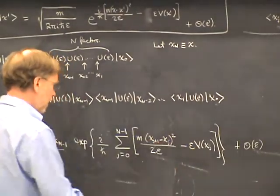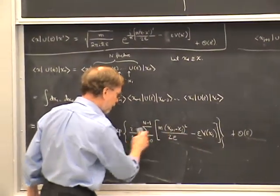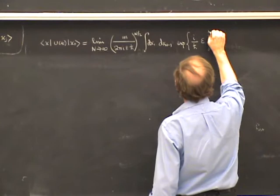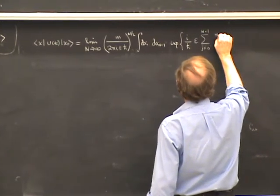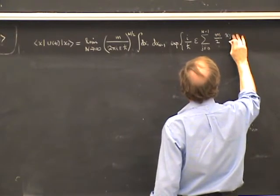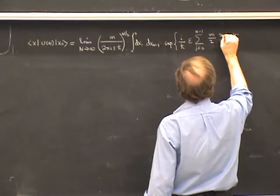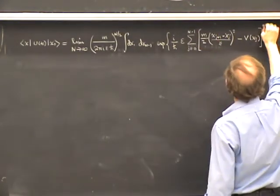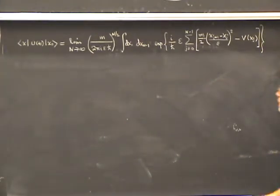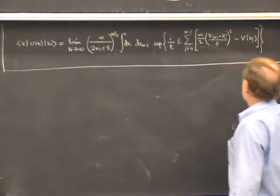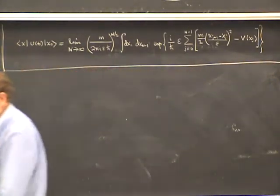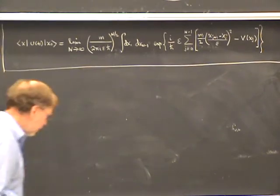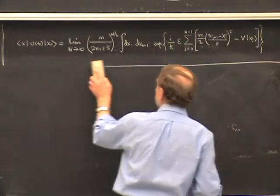Factoring out epsilon from the exponent, the result becomes: the exponential of i over ℏ times epsilon times the sum from j equals 0 to N minus 1 of [M over 2 times (X_{j+1} minus X_j over epsilon) squared minus V(X_j)]. This can be regarded as the discretized version of the path integral in configuration space. It's a first major step — expressing the propagator in terms of an infinite-dimensional integral.